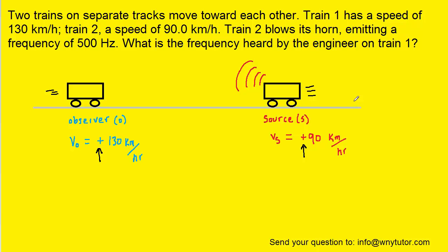We can next introduce the Doppler effect equation. So here we have the equation. Note that the term V is the speed of sound, which is going to be roughly 343 meters per second.